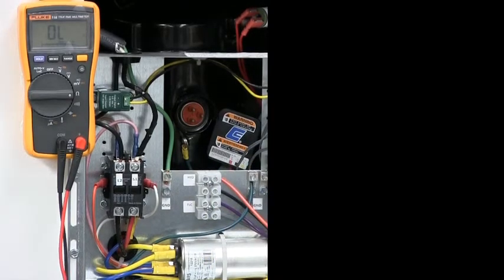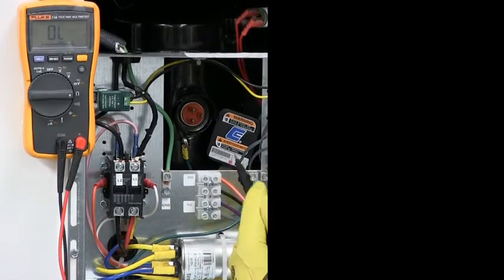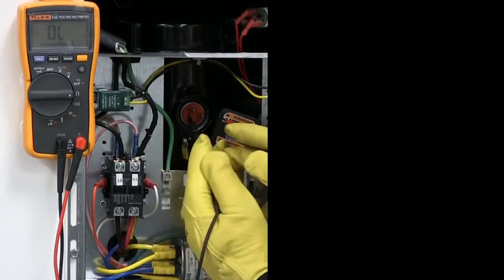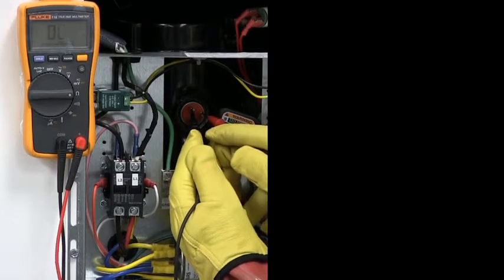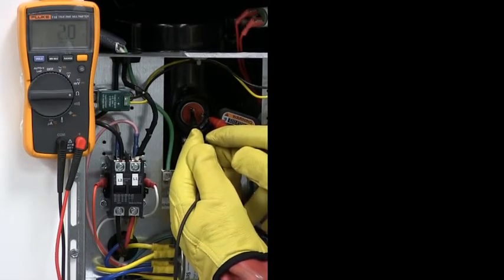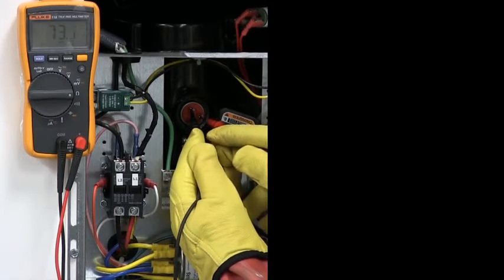You'll want to put your meter on the lowest ohm setting and check the resistance between the common and the start winding. It should be between 1 and 3 ohms. As we can see on the meter, we're looking at about 2 ohms, so that one's good.